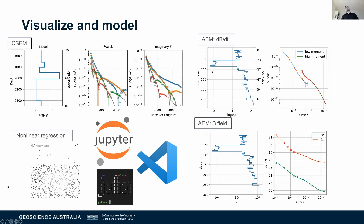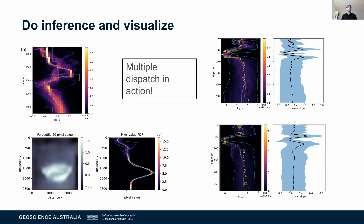You could do the same thing with airborne electromagnetic data — say you wanted to compare two different systems for the same kind of geology. One looks at dB/dt, the other looks at the magnetic field itself. You can compute the responses, or say you wanted to do non-linear regression: there's a bunch of points here, it could be geochemical data and you want to fill in the gaps. You can visualize and model all in Julia, and then do the inference also all in Julia.